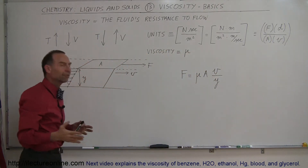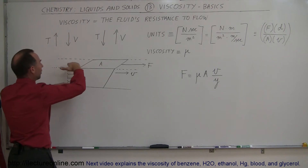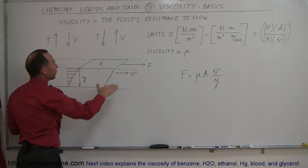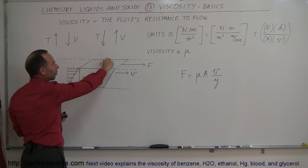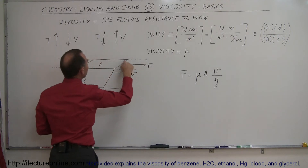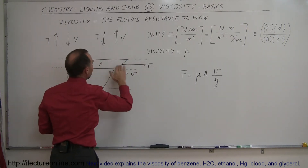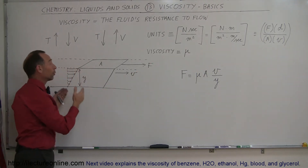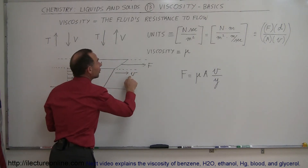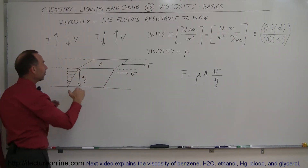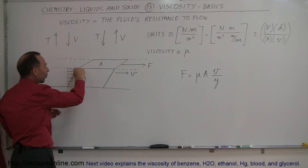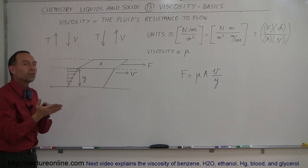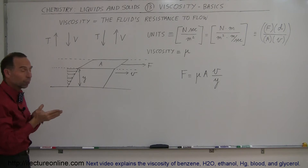So where did all that come from? The way viscosity is determined: imagine you have some water sitting in a big container. You place something on top that floats and can be pulled along. The piece you're pulling has a cross-sectional area A, and you pull it at a velocity V requiring a certain force F. The greater the viscosity, the greater the force needed. The layers of water right below the object get pulled along due to adhesion forces between the water and the object.